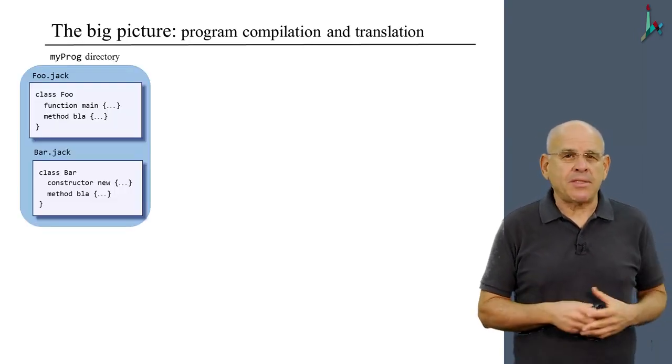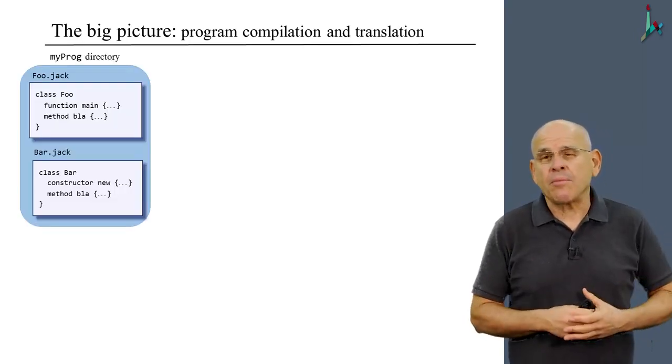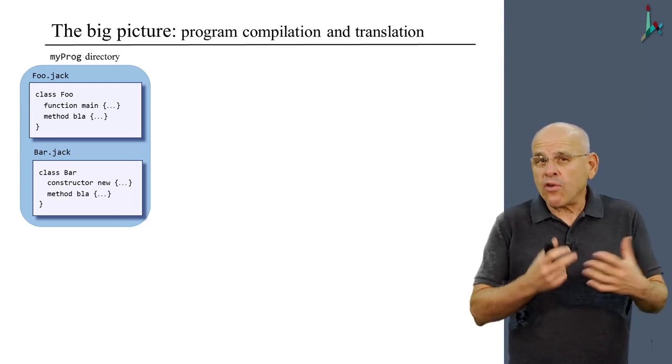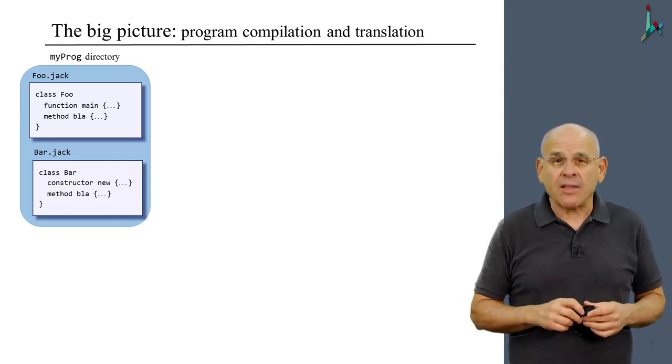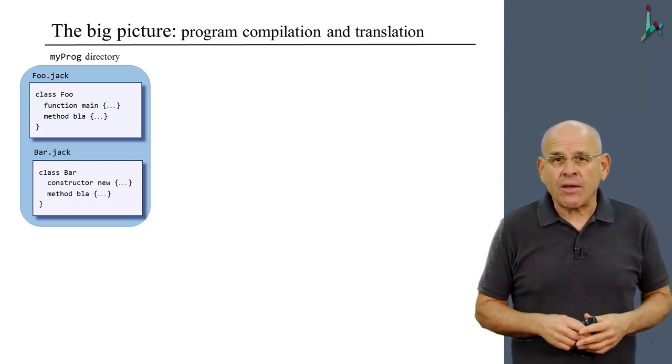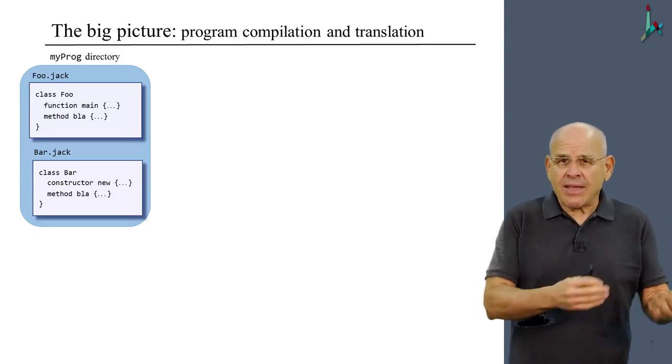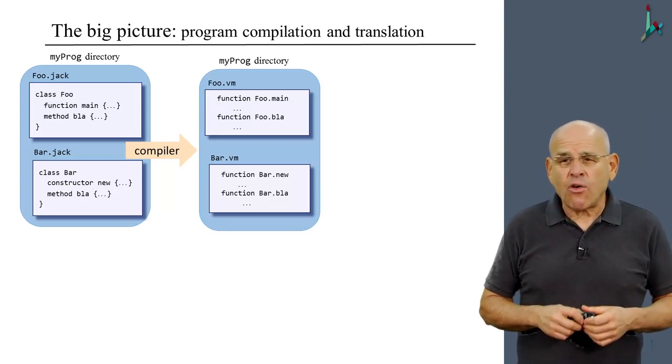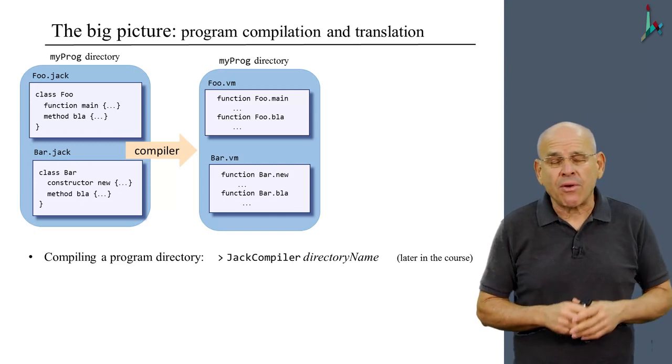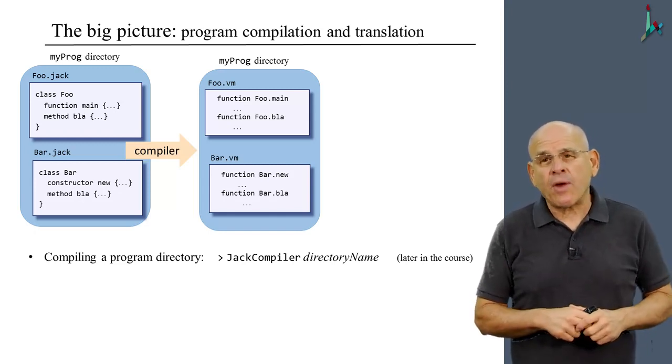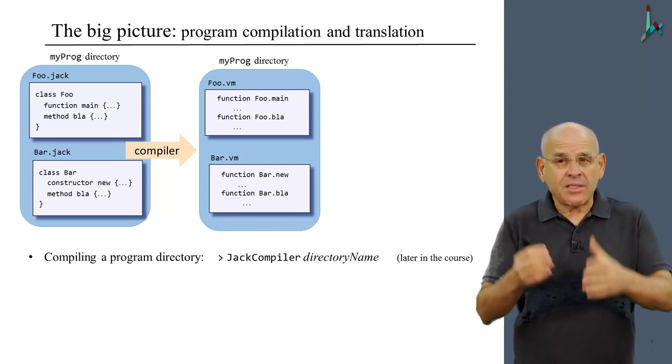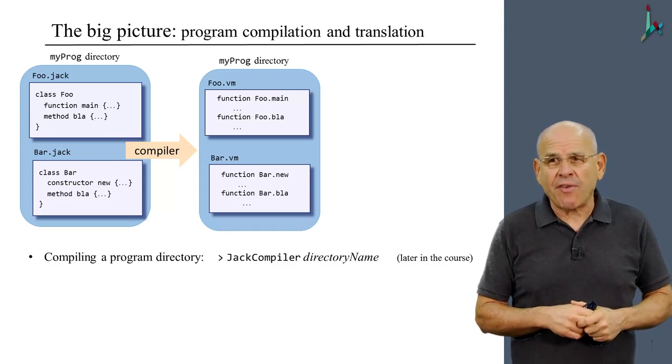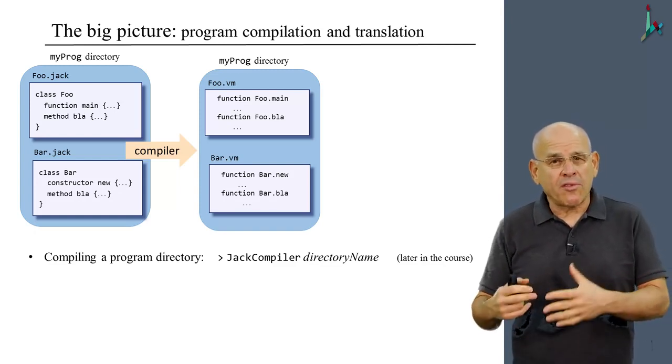The picture is that we begin with some Jack program. The Jack program is stored as one or more Jack files, which are put in a certain directory or folder. This directory has a name, I call it myprog. Then, I'm going to apply the Jack compiler to this entire directory. The Jack compiler is going to create two, in this example, two new files, which will be the VM translations of the Jack files. One will be called, by default, foo.vm.